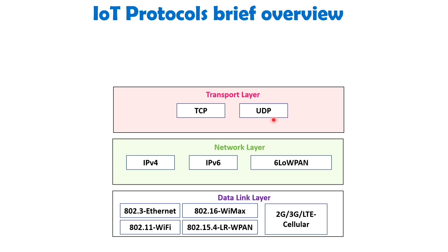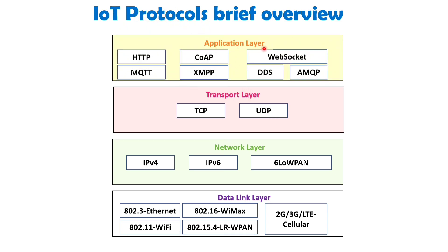Finally, the application layer, positioned at the 7th layer of the OSI model, ensures effective communication between applications running on different computer systems and networks. It encompasses various application layer protocols including HTTP, CoAP, MQTT, XMPP, DDS, AMQP and others. We will discuss all these protocols in detail in future videos.